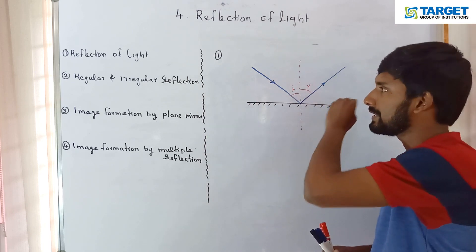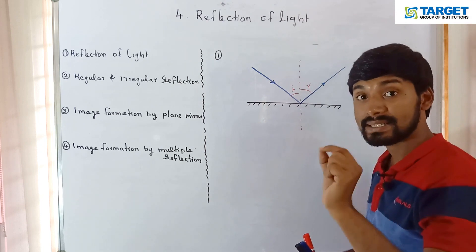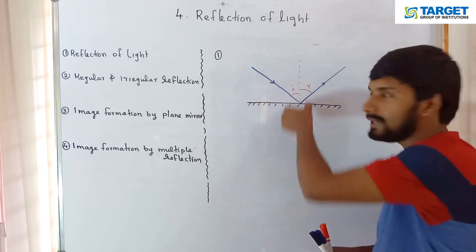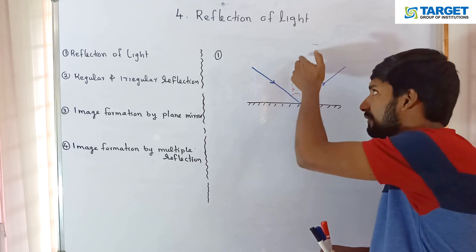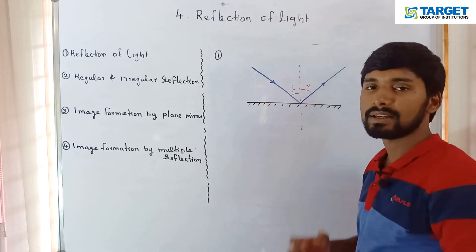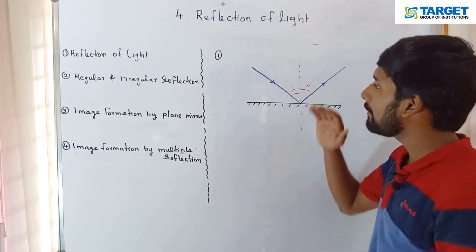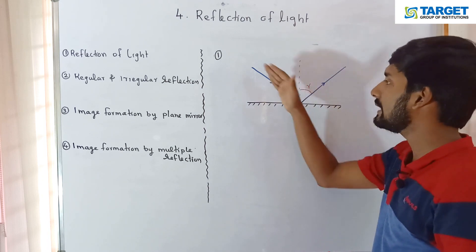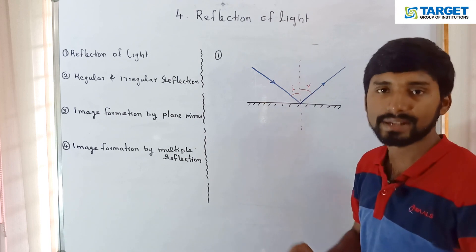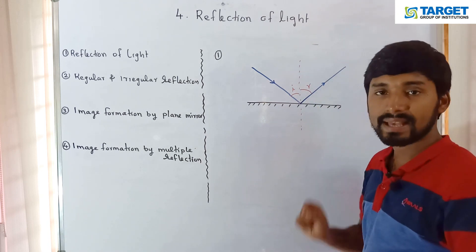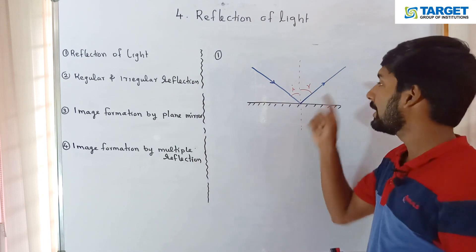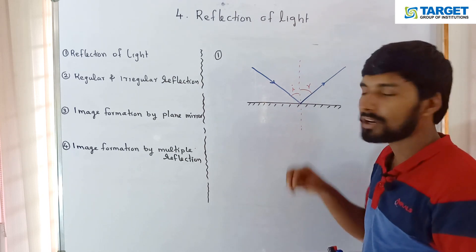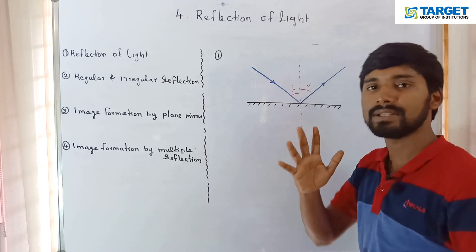Looking at the diagram: the incoming light ray is known as the incident ray, and the outgoing light ray is known as the reflected ray. The line perpendicular to the surface at the point of incidence is the normal. The angle between the incident ray and the normal is the angle of incidence, and the angle between the reflected ray and the normal is the angle of reflection.